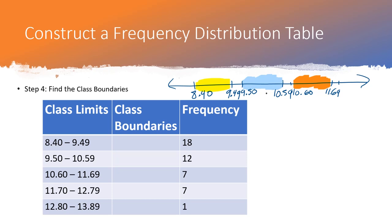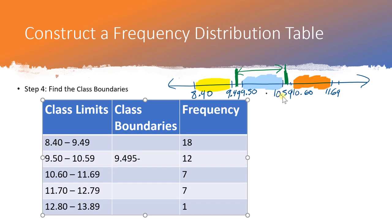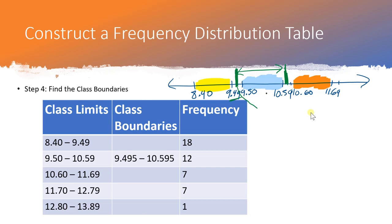For the second class, the boundary extends from the midpoint of the gap below it to the midpoint of the gap above it. The midpoint between 9.49 and 9.50 is 9.495, and the midpoint between 10.59 and 10.60 is 10.595. So the second class boundary runs from 9.495 to 10.595.